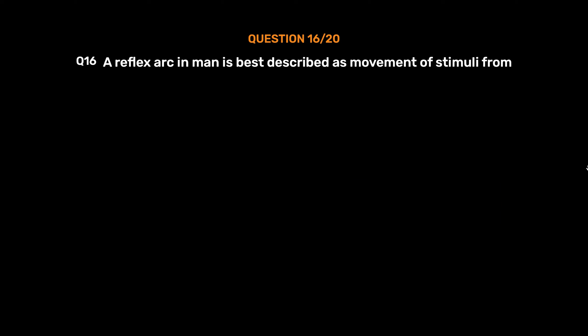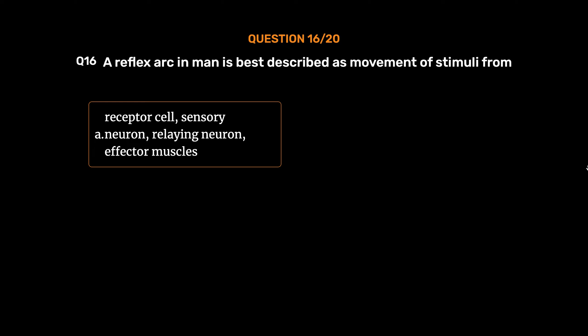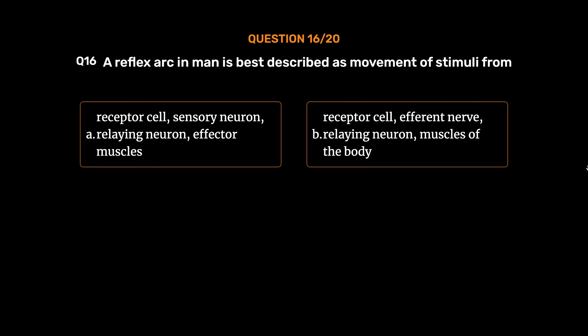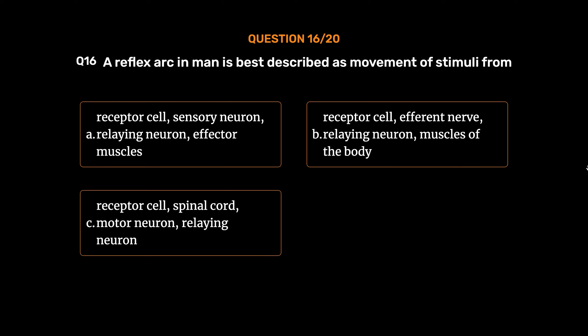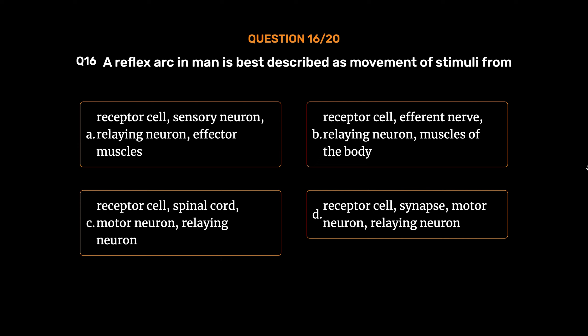Question number 16. A reflex arc in man is best described as movement of stimuli from: Option A: Receptor cell → Sensory neuron → Relaying neuron → Effective muscles. Option B: Receptor cell → Efferent nerve → Relaying neuron → Muscles of the body. Option C: Receptor cell → Spinal cord → Motor neuron → Relaying neuron. Option D: Receptor cell → Synapse → Motor neuron → Relaying neuron. The correct answer is Option A: Receptor cell, Sensory neuron, Relaying neuron, Effective muscles.